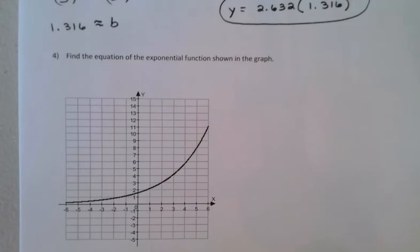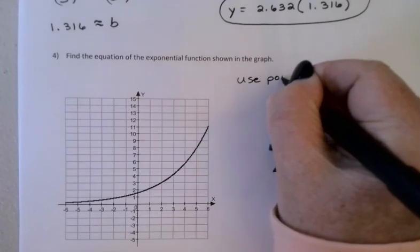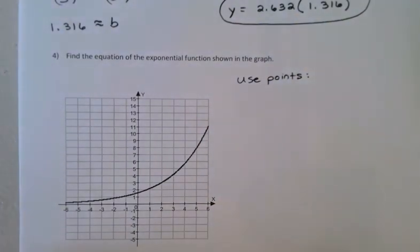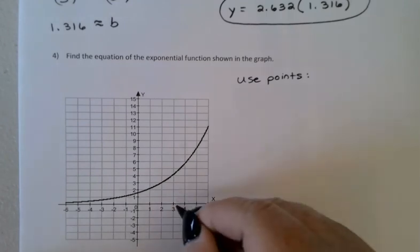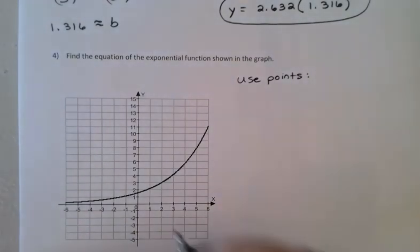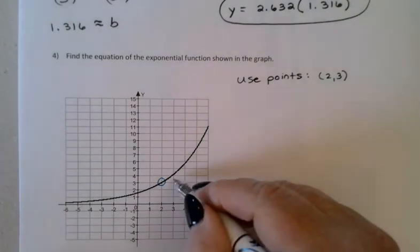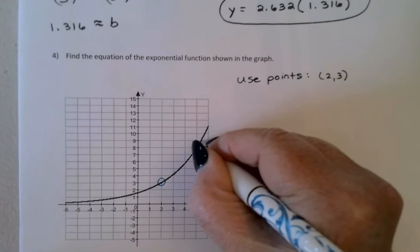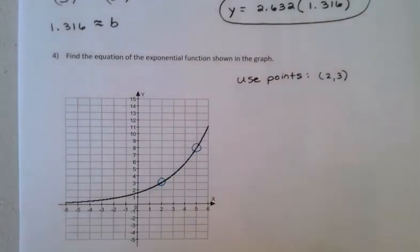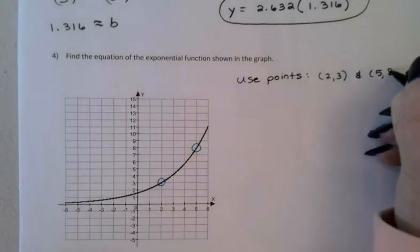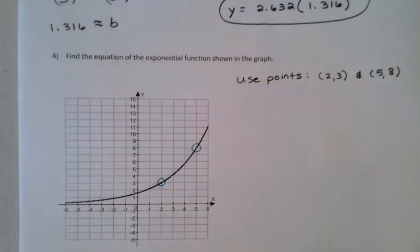Alright. In this last example, rather than being given a couple of points, we're given a graph. We're going to basically do this problem exactly the same as the previous one. We weren't given two points, but we should be able to find two points from the graph. So I'm going to use two really nice points. I don't want to estimate fractions or decimals. And the first one that I see that looks really good here is, it looks like (2, 3). It goes right through the corner of the grid there. So (2, 3) is going to be one of my points. And I think this one just misses, just misses. This one looks pretty good, though. (5, 8).